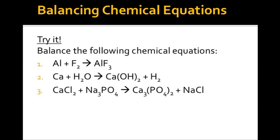Hope you all learned how to balance chemical equations. Now try these three reactions as homework. First: aluminium reacts with fluorine to form aluminium fluoride. Second: calcium reacts with water to form calcium hydroxide and hydrogen gas. Third: calcium chloride reacts with sodium phosphate to form calcium phosphate and sodium chloride. Thank you.